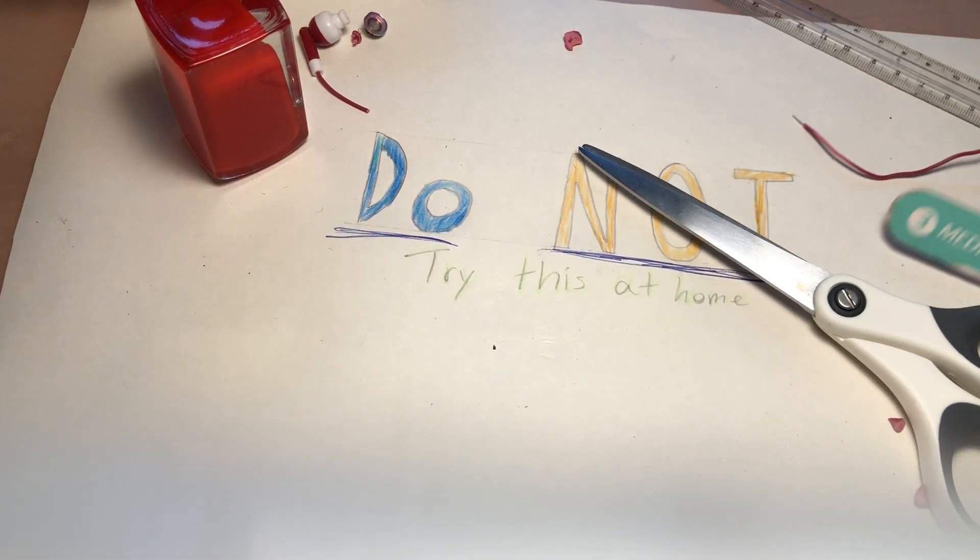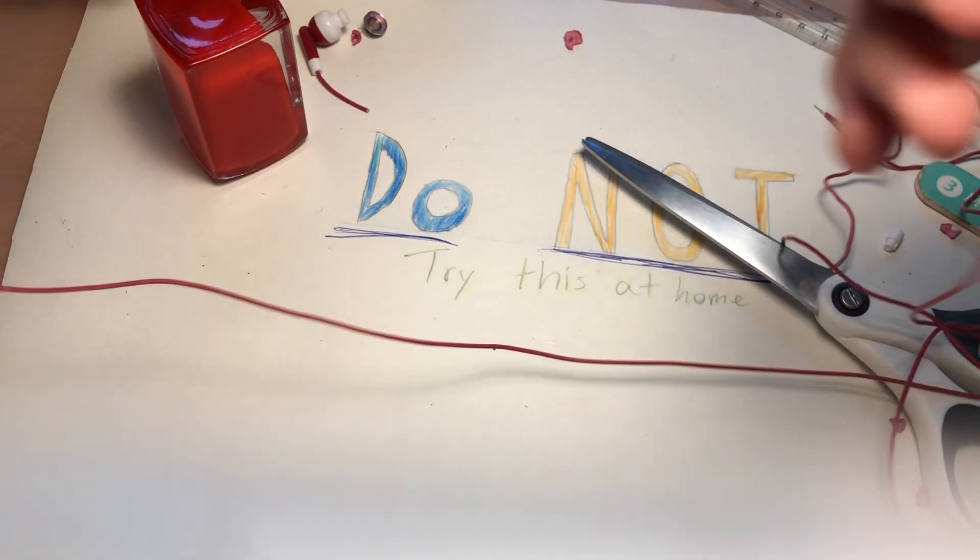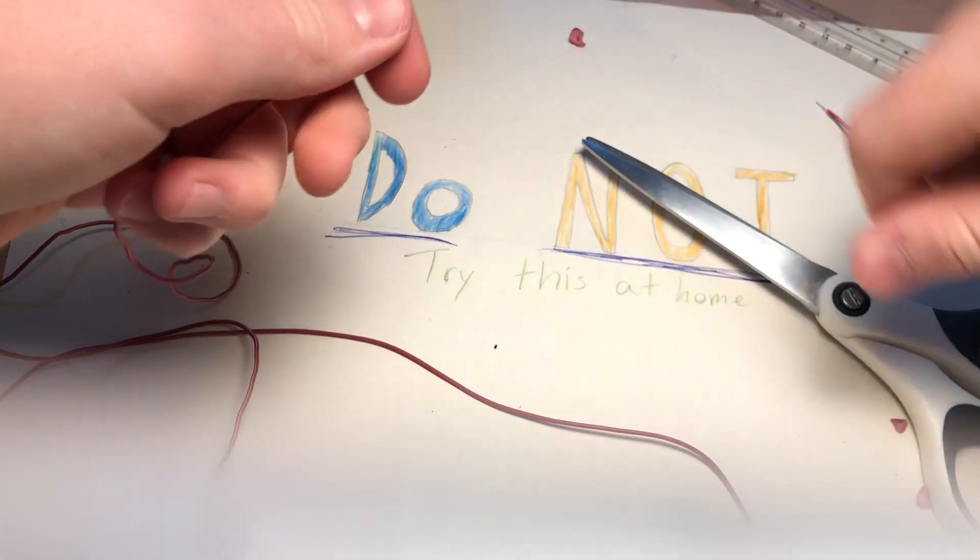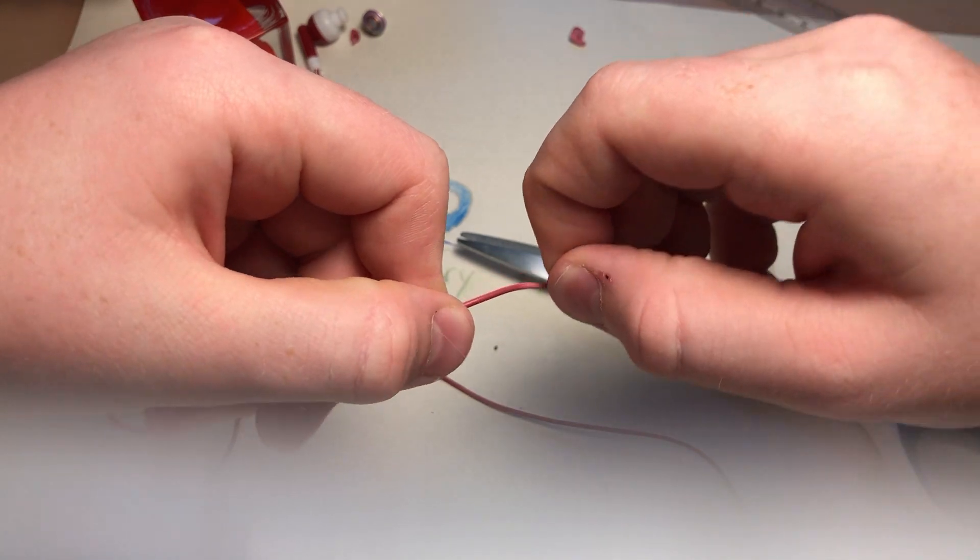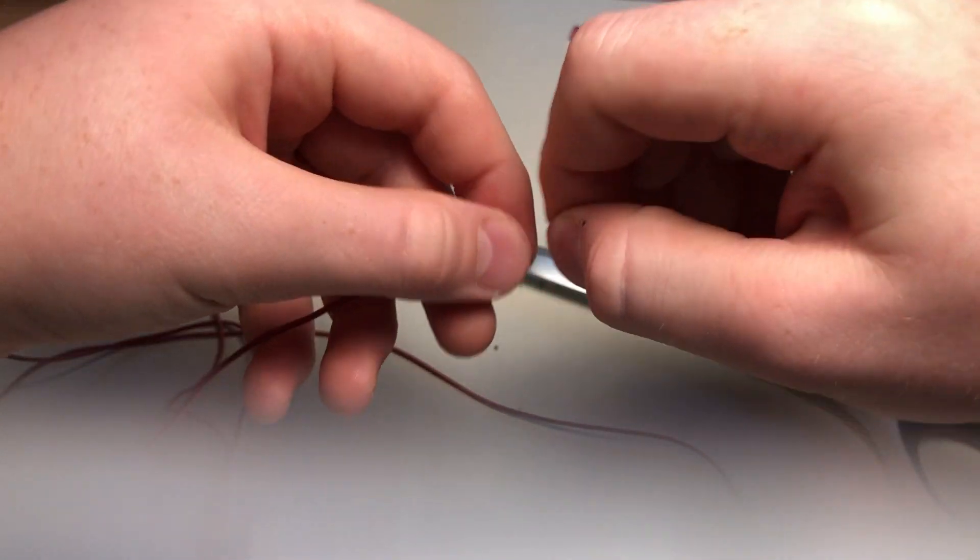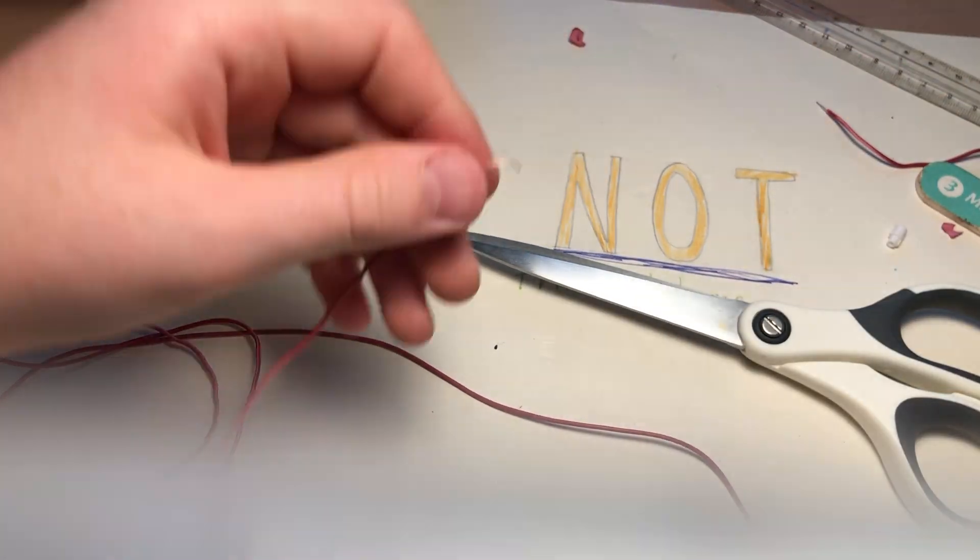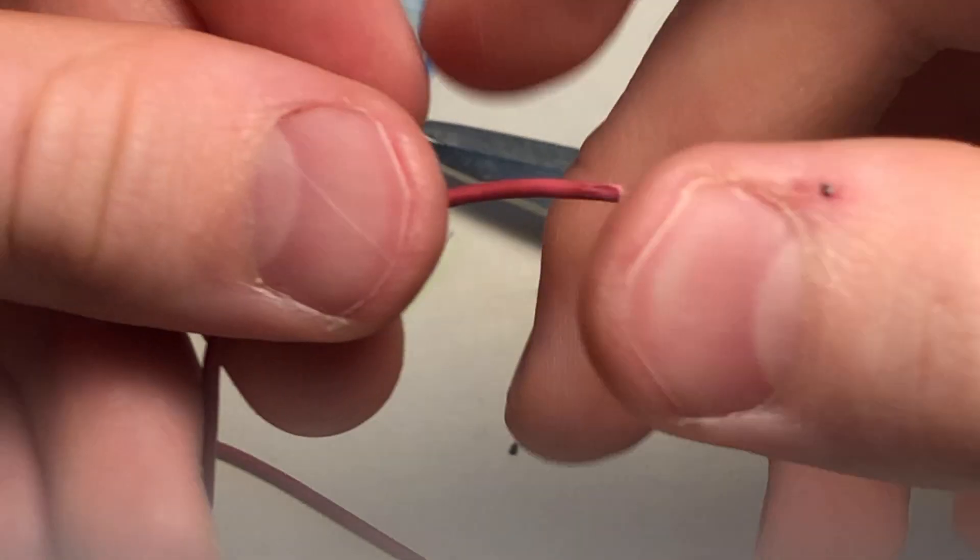Once you're done with all that, you're left with some wire. I don't know what you can do with it. You can do many things with wire. This is stripped. You could strip the wire, look at the inside.